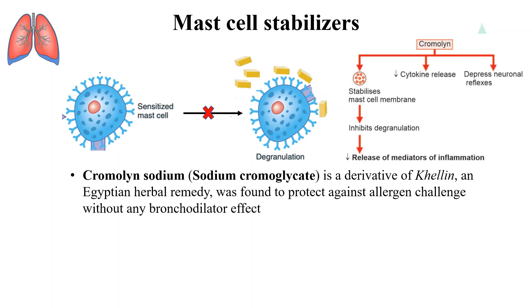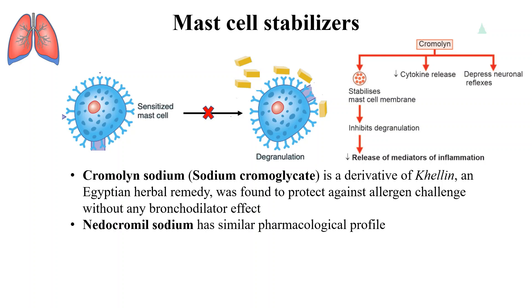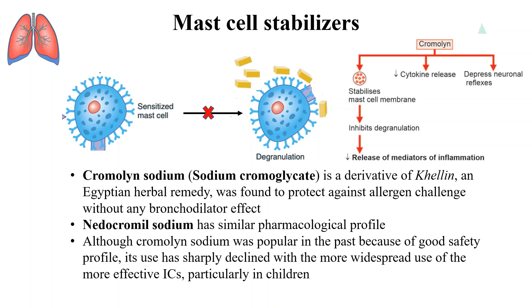Cromolyn sodium, or sodium cromoglycate, is a derivative of khellin, an Egyptian remedy which was found to protect against allergen challenge without any bronchodilator effect. Nedocromil sodium has a similar pharmacological profile.